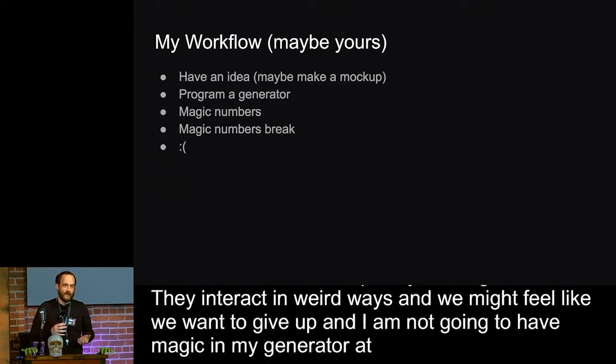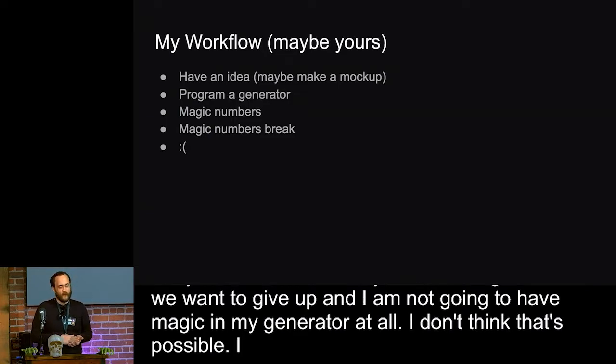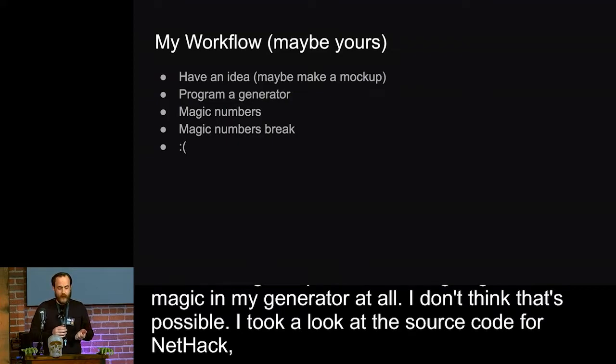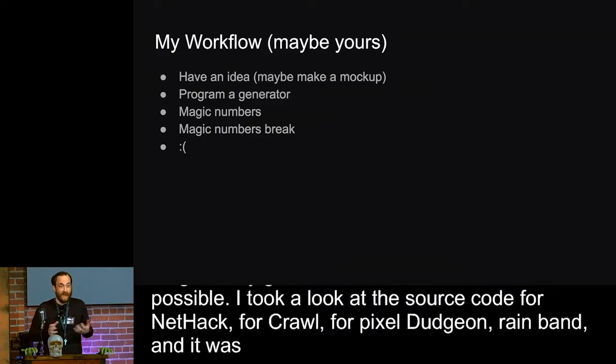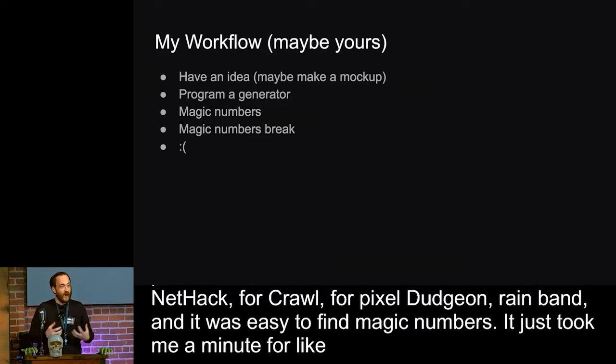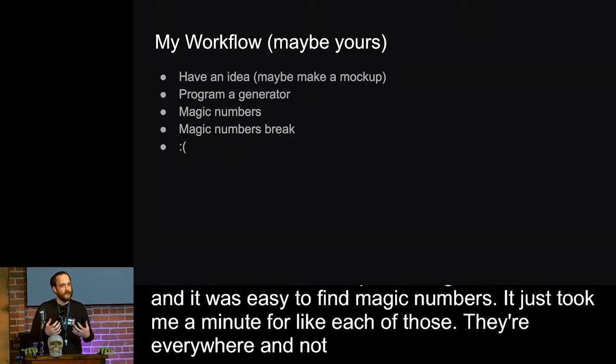I took a look at the source code for NetHack, for Crawl, for Angband, for Pixel Dungeon, and it was really easy to find magic numbers. Like, it just took me a minute for each of those. They're everywhere. And they're not well documented. It's hard to figure out what the intention of the designer was when they picked those magic numbers.